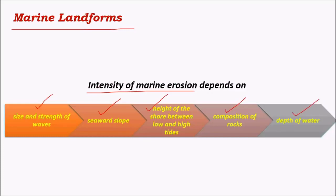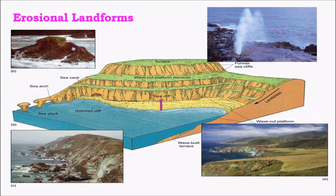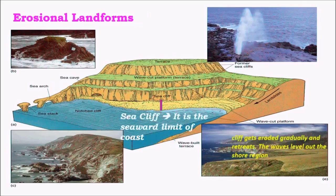The depth of water, which facilitates ocean currents, also plays a major role in marine erosion. The major erosional landforms are sea cliffs, wave-cut terraces, blowholes, sea arch, sea cave, sea stack, and terrace-like landforms.